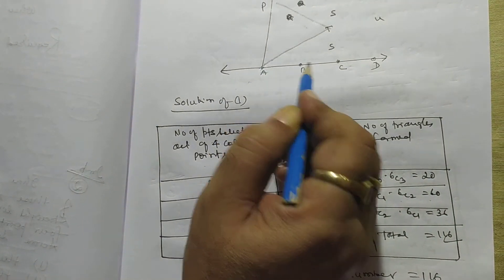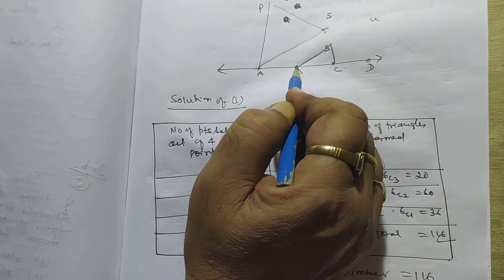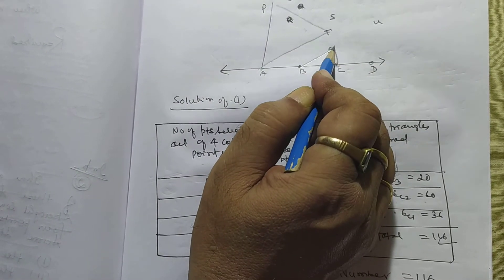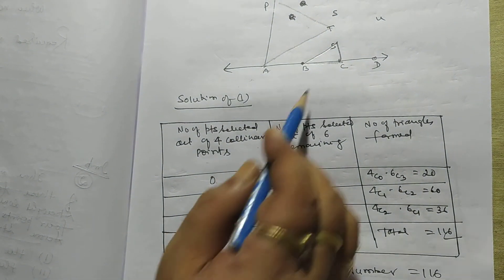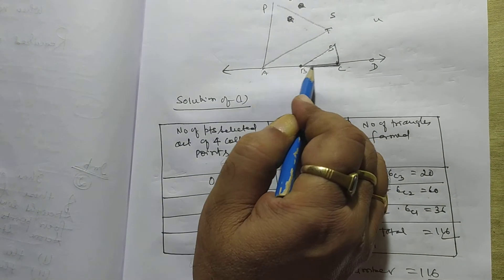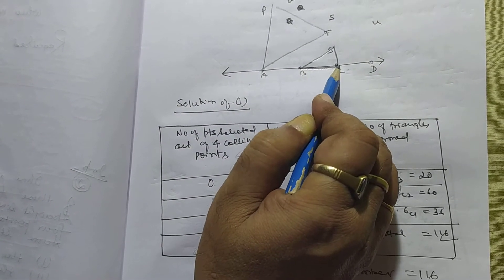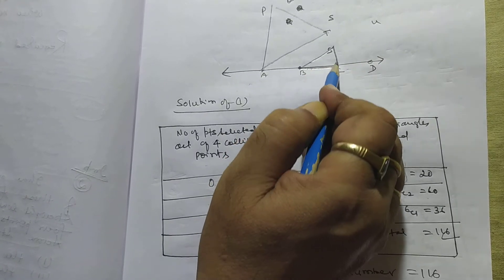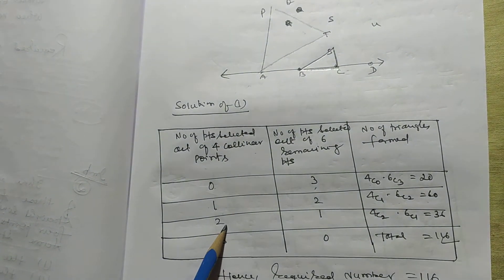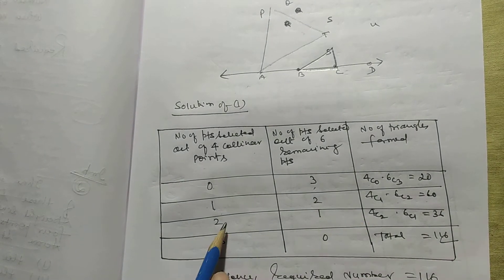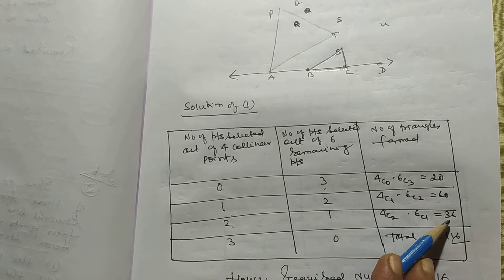Case 2: Take 2 points from the 4 collinear points and 1 from the 6 non-collinear points: 4C2 × 6C1 = 6 × 6 = 36. A triangle can still be formed in this case since only 2 collinear points are taken.